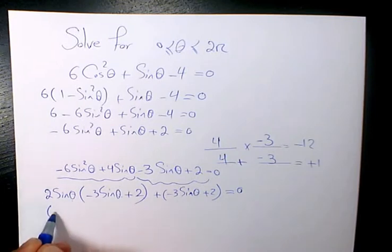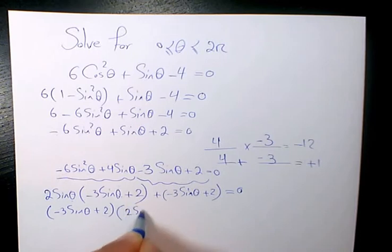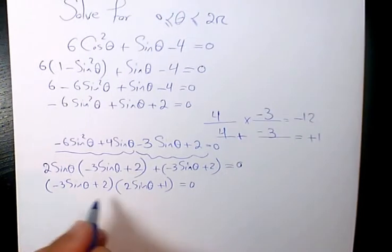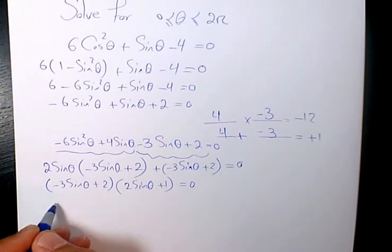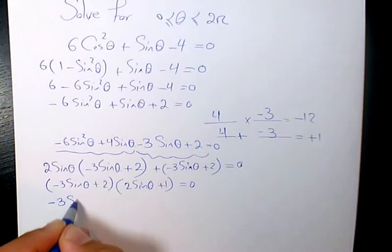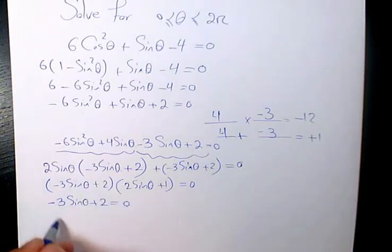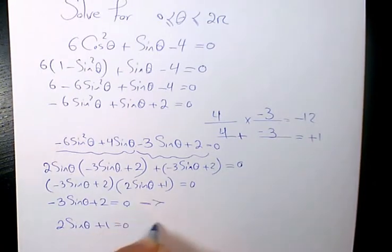Then I factor the remaining group: negative 3 sine theta plus 2 equals to 0. The factored form gives (2 sine theta plus 1) equals to 0. By the zero product property, either negative 3 sine theta plus 2 equals to 0, or 2 sine theta plus 1 equals to 0.